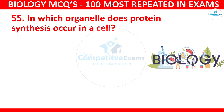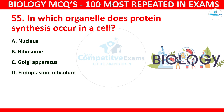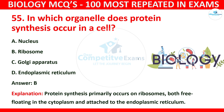Question number 55: In which organelle does protein synthesis occur in a cell? The options are nucleus, ribosome, Golgi apparatus, or endoplasmic reticulum? The correct answer is B: ribosome. Protein synthesis primarily occurs on ribosomes, both free-floating in the cytoplasm and attached to the endoplasmic reticulum.